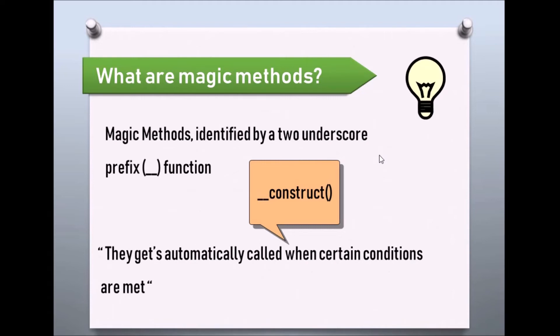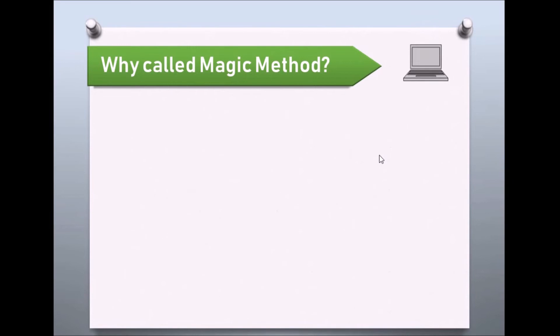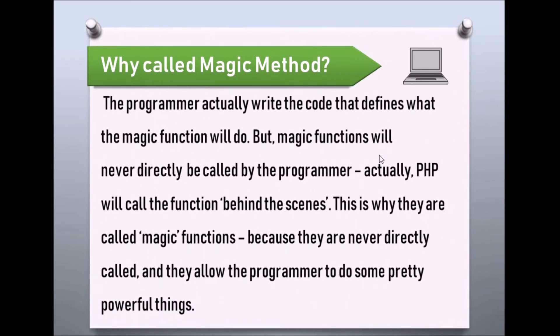Why are they called magic methods? The programmer writes the code that defines what the magic function will do. But magic functions will never directly be called by the programmer - PHP will call the function behind the scenes. This is why they are called magic functions, because they are never directly called and they allow the programmer to do some pretty powerful things.